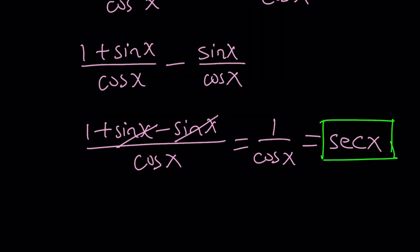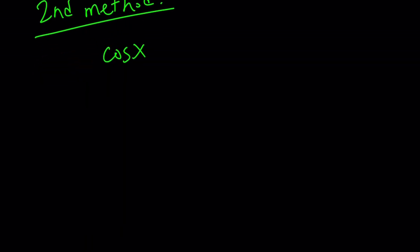Now, let's go ahead and take a look at the second method. So let me rewrite the original problem. Cosine x over 1 minus sine x minus tangent x.